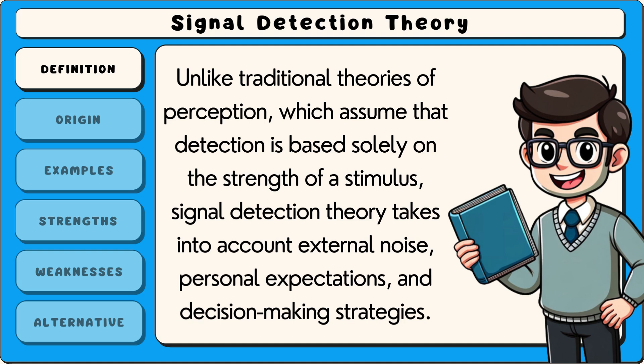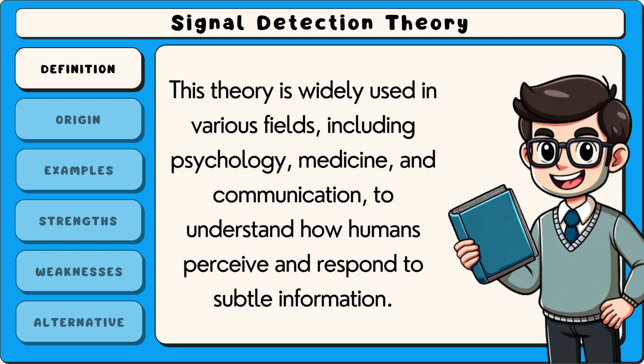Unlike traditional theories of perception, which assume that detection is based solely on the strength of a stimulus, signal detection theory takes into account external noise, personal expectations and decision-making strategies. This theory is widely used in various fields, including psychology, medicine and communication, to understand how humans perceive and respond to subtle information.